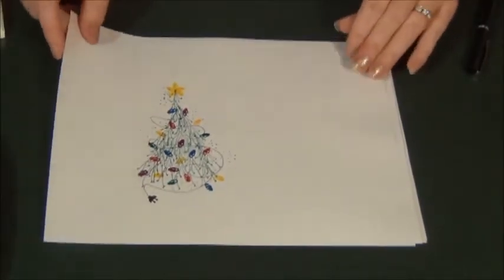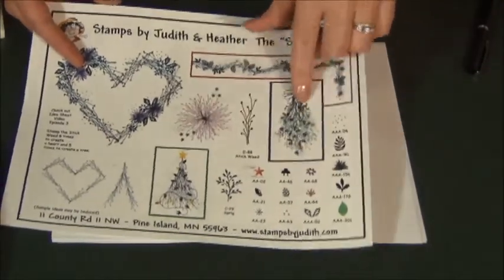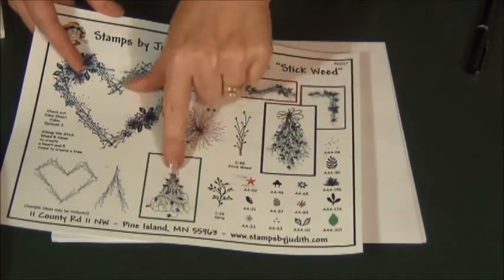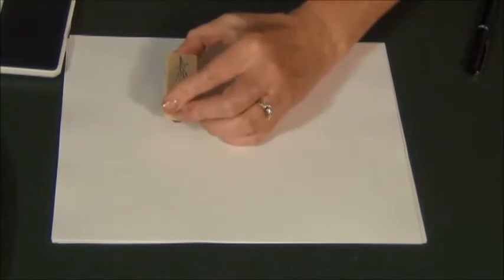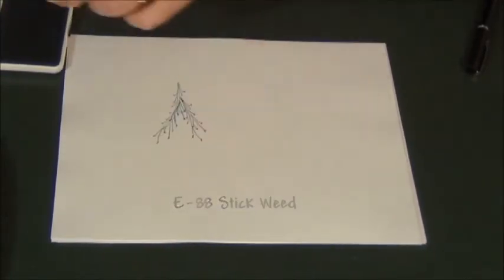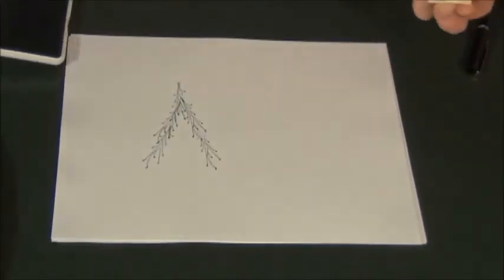And there's the tree. The third idea on episode three is the hanging swag, which is essentially the tree, but extended a little bit. And I'm going to start off the same way that I did with the tree. Creating my little tent with five stickweeds.